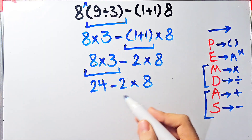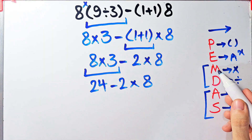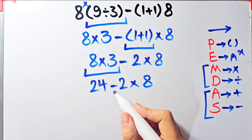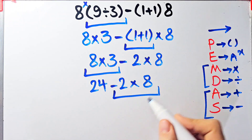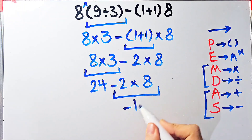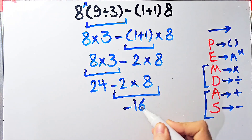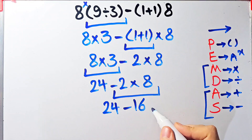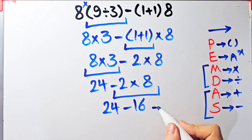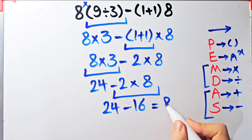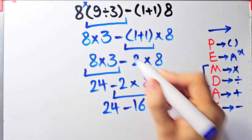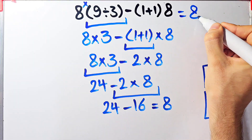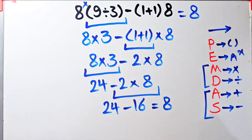Negative 2 times 8 equals negative 16. Now we have 24 minus 16, and the final answer of this question equals 8. Thanks for watching guys, please subscribe to the channel and leave a comment.